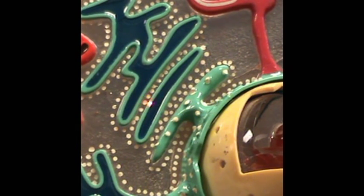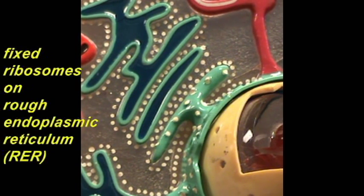Notice that there are dots and you can see them directly on the surface of the endoplasmic reticulum right over here. These white dots represent ribosomes, so these would be fixed ribosomes on rough endoplasmic reticulum.